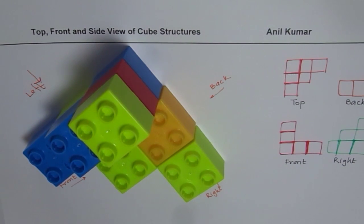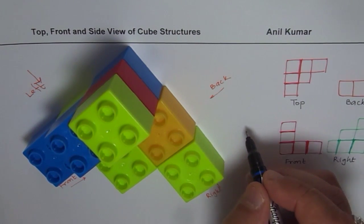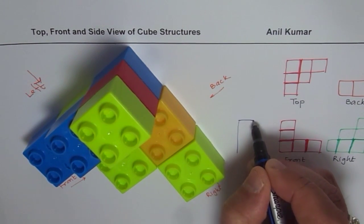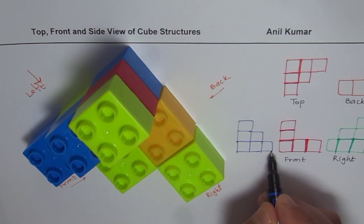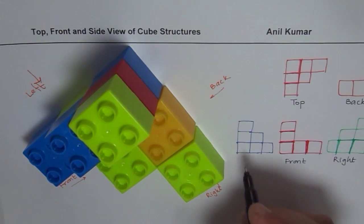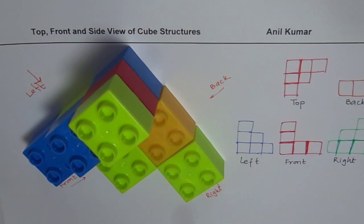Now let us draw the left side — left is from this side. As you can see, there are no changes in height from that side. It is kind of similar — you see three, two, and one. So you see a block of three, then a block of two, and then a block of one. From the left side, you do not see any differences; three straight, two straight, one straight. So there is no change in level. From the left side, there are no changes in level.